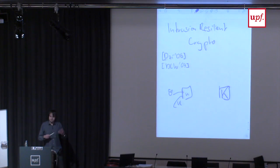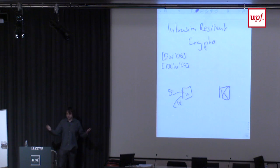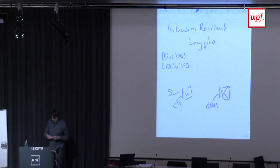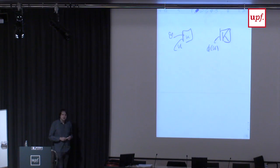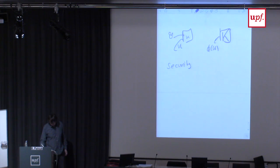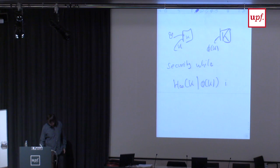The security notion for intrusion-resilient schemes is: even if you get a virus on your computer and the virus manages to send out not the entire key but some function phi of K — say 50 gigabytes — which is an arbitrary function of your secret key, we want security. What we want is that the scheme remains secure assuming the key K has still sufficiently high min entropy given the adversary's view, i.e., given this compressed key phi of K.